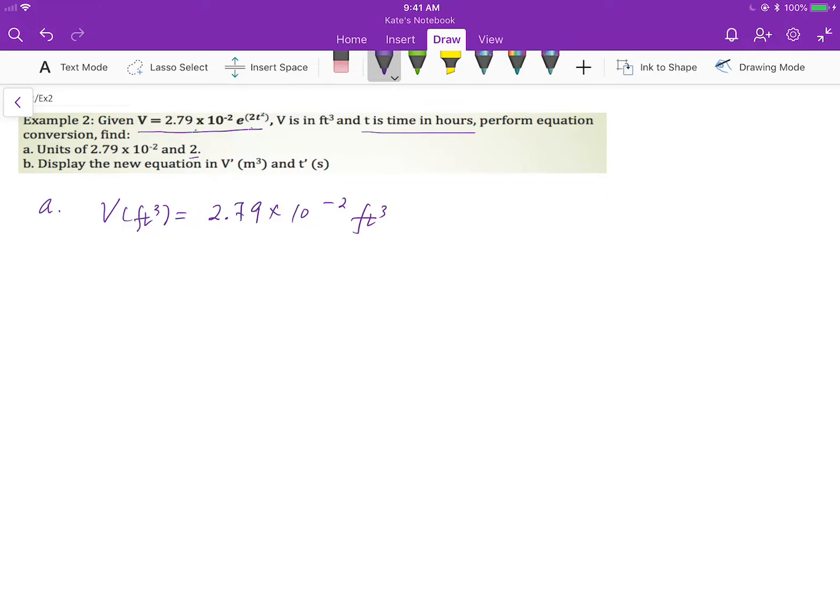Because we know whenever you see natural base, natural log, and log, those are dimensionless groups. They don't have unit. So you can go ahead to ignore the units for now in that part. Therefore, you get the unit for 2.79 times 10 to negative 2 is cubic feet.